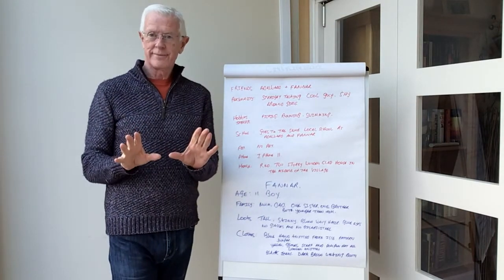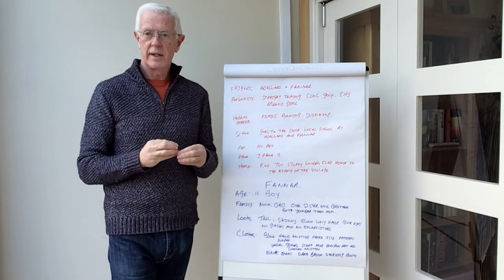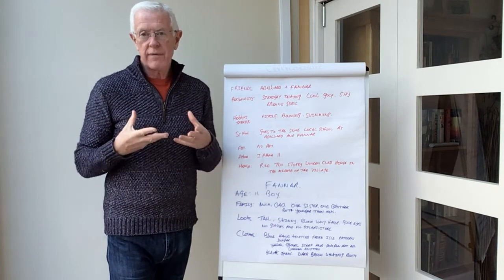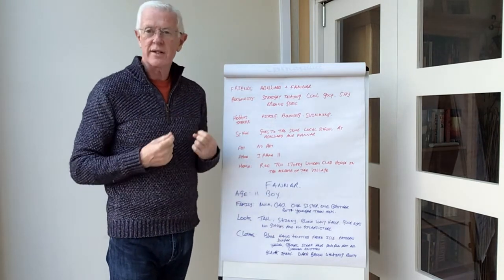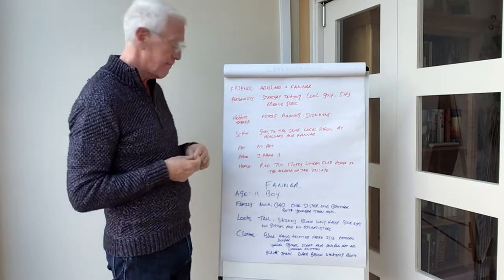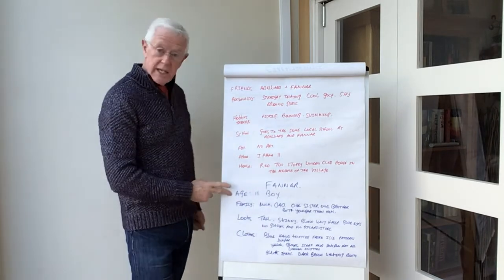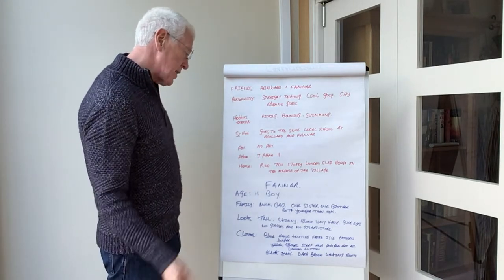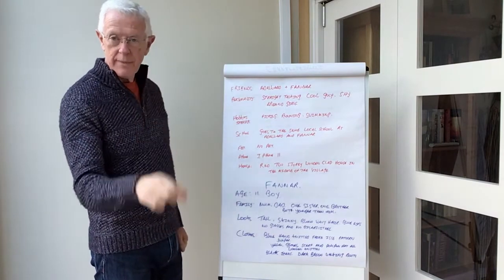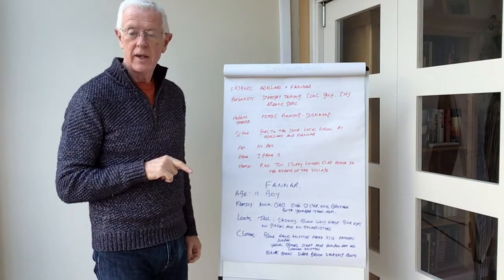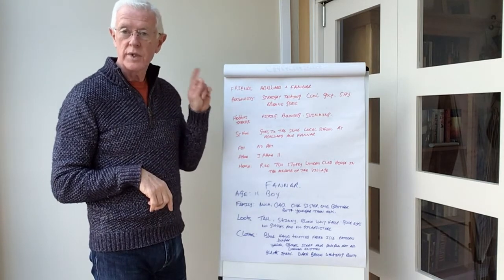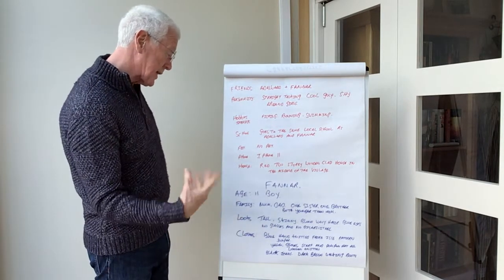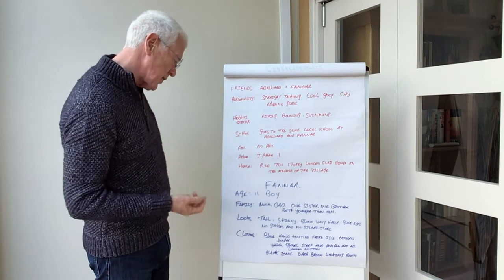Fanna is a different character, because you need your characters to be different — if they're the same it doesn't add any value to the story. You need different characters that bring different characteristics so you can talk about those. Fanna: aged 11, boy. Family — mum and dad, one sister and one brother, both younger than him, so he's absolutely the eldest child, whereas Alderwood was the youngest. Looks: tall, skinny, blonde wavy hair, blue eyes, no glasses and no disabilities.